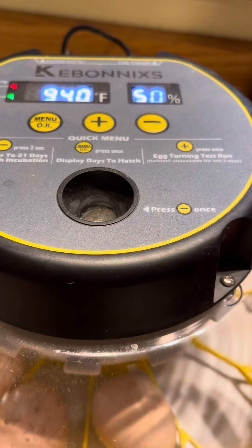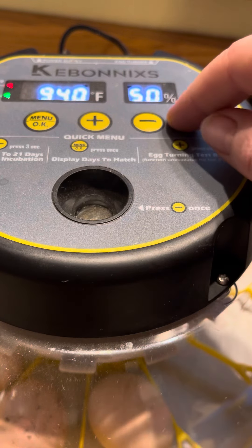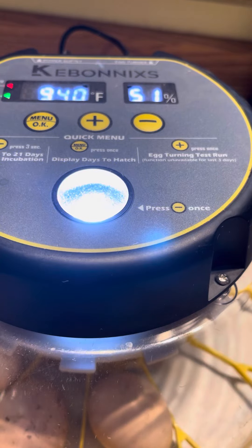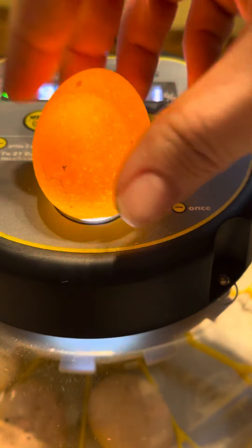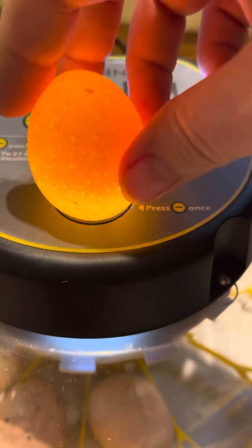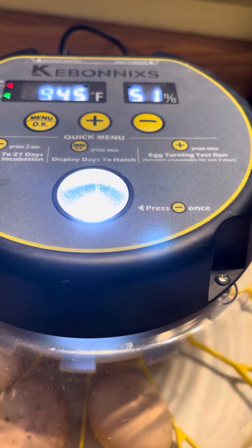This incubator also comes with a built-in egg candler, which is a pretty cool feature. To turn it on, you just hit the minus key. Then you can take a look at your eggs and watch the progress of every little embryo - how it's growing and if there are any issues with the egg. Pretty cool.